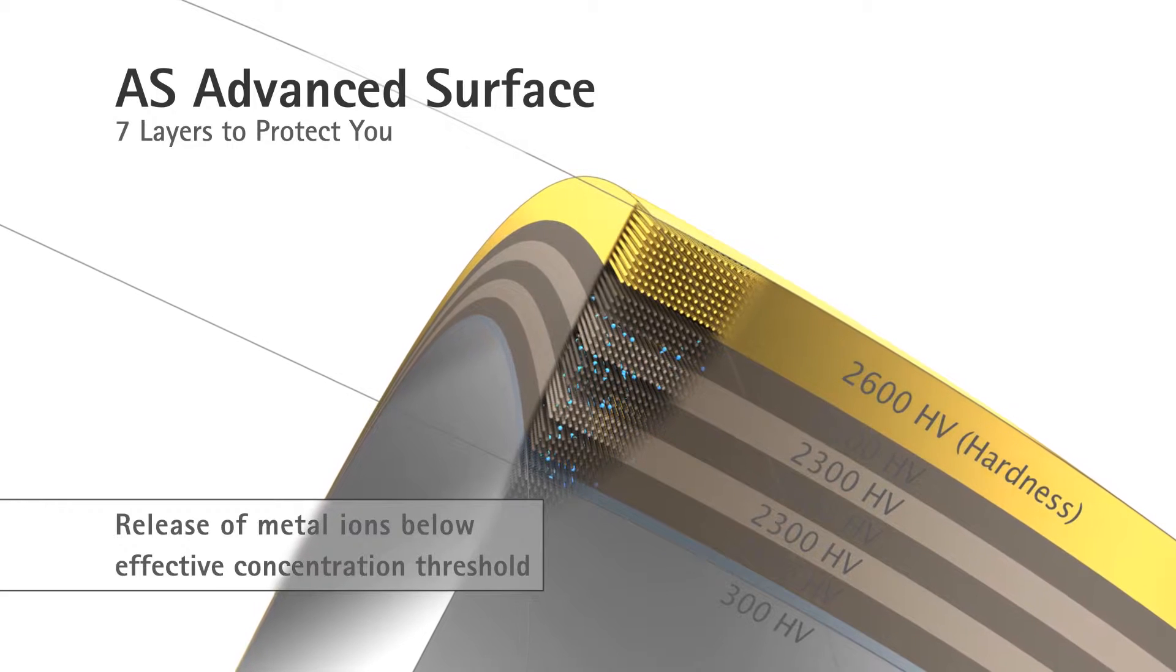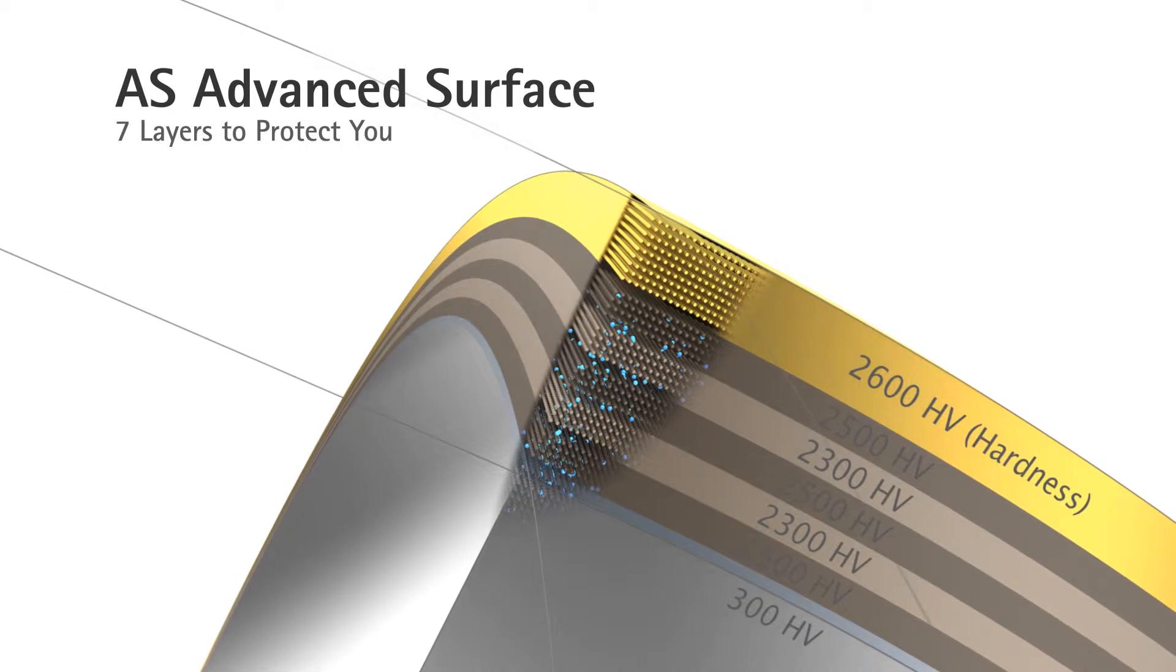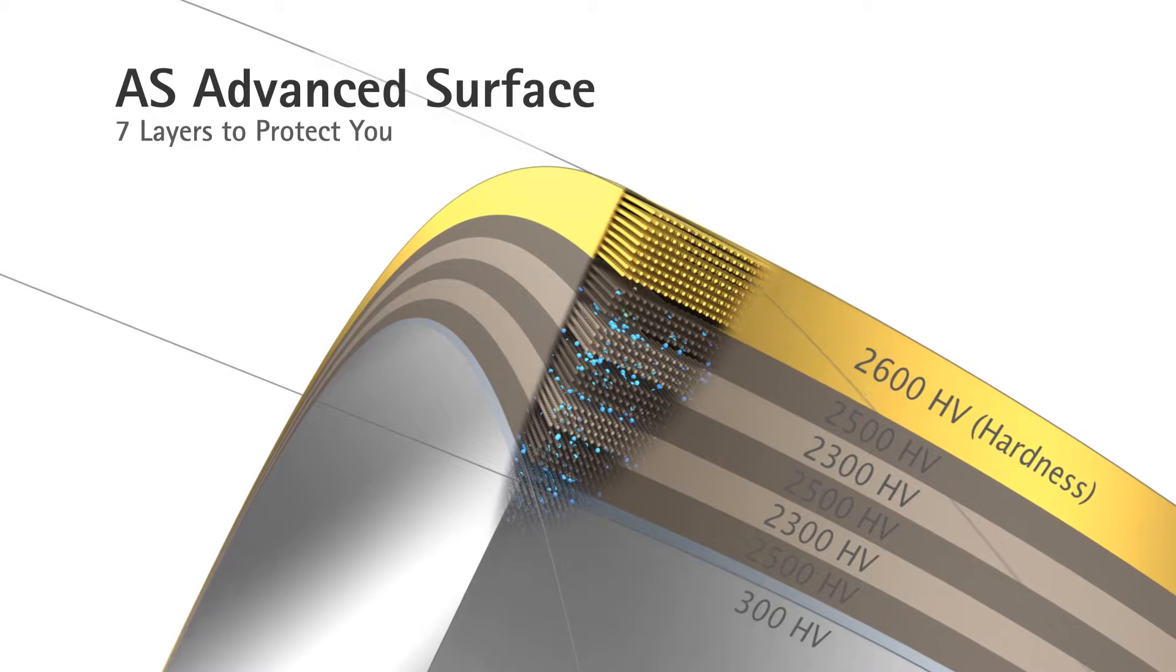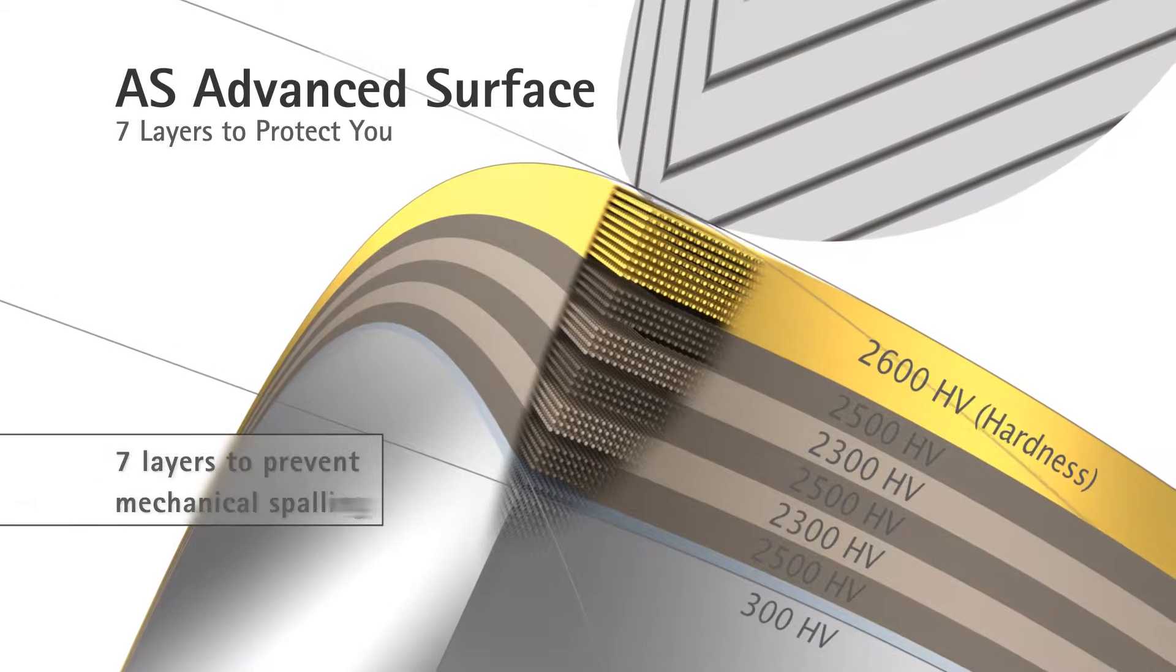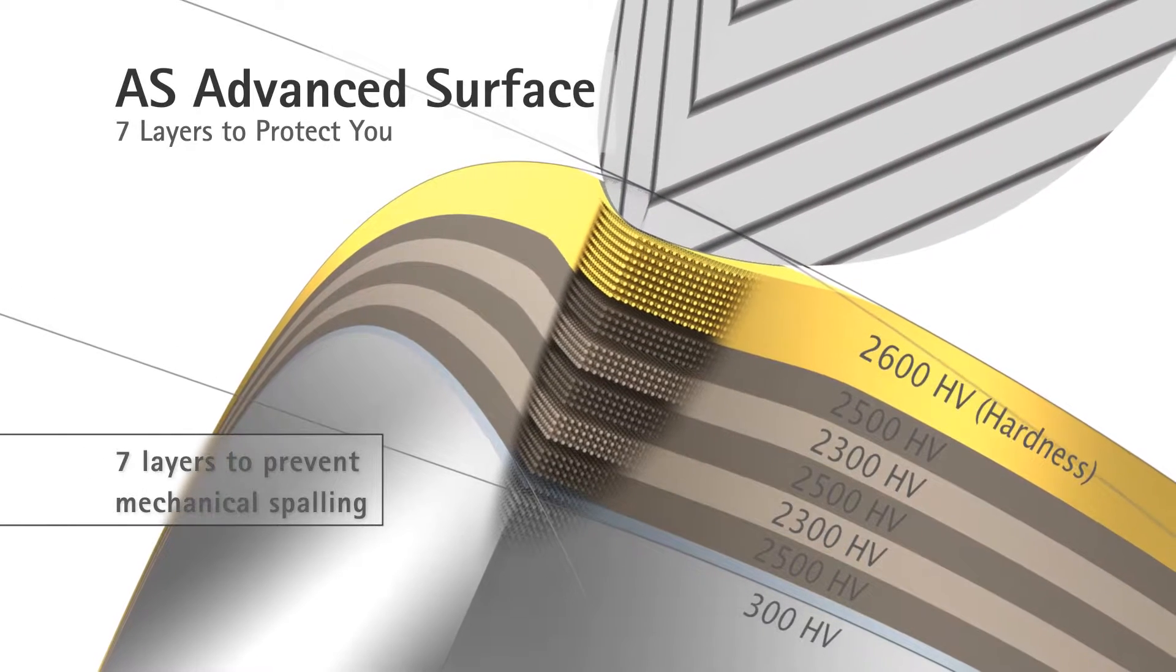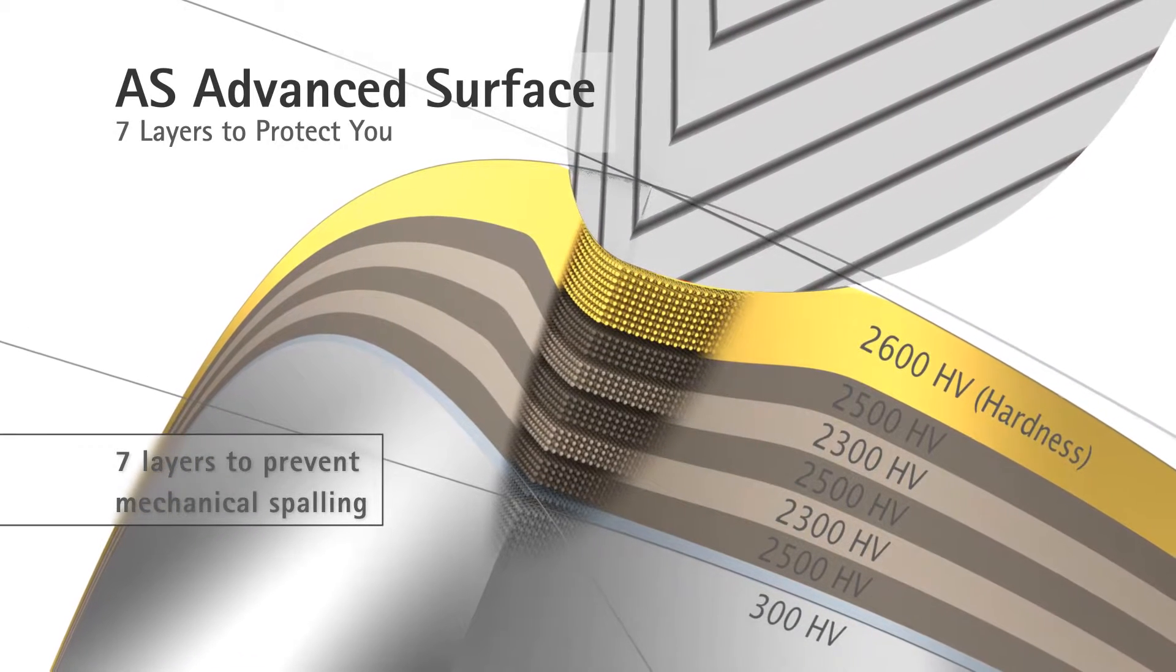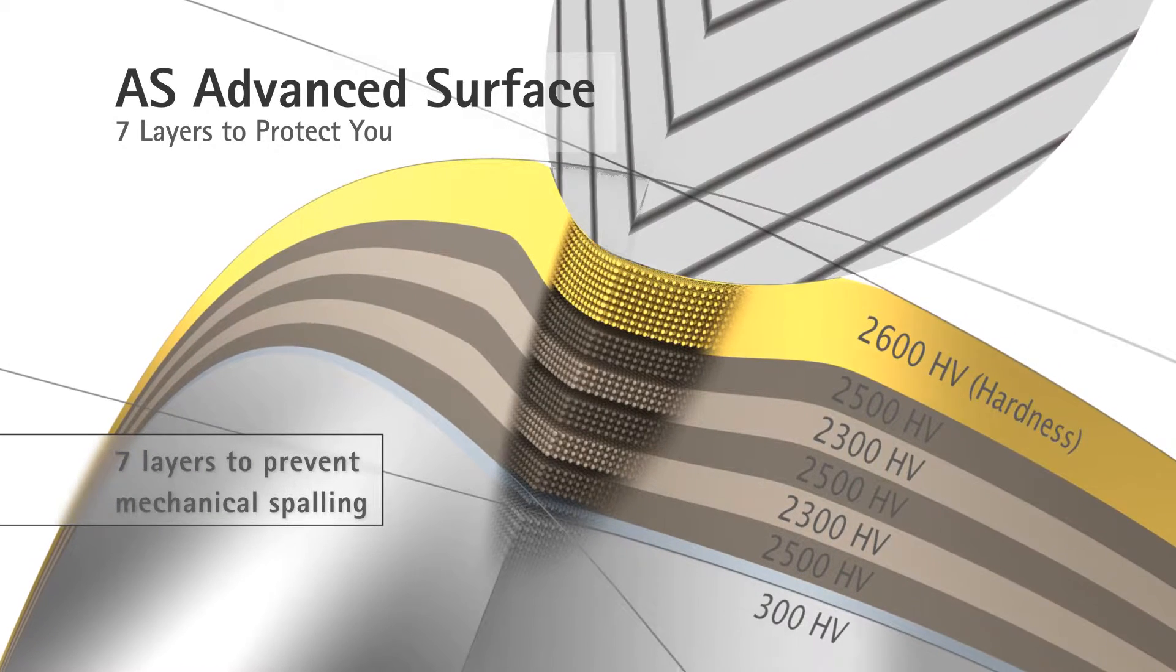This means that implants with an advanced surface coating can significantly reduce the five times higher risk of implant allergy in patients following revision surgery. The rather hard ceramic outer layer on the relatively soft cobalt-chrome substrate prevents a higher risk of the coating spalling, as was previously observed with monolayer coatings.